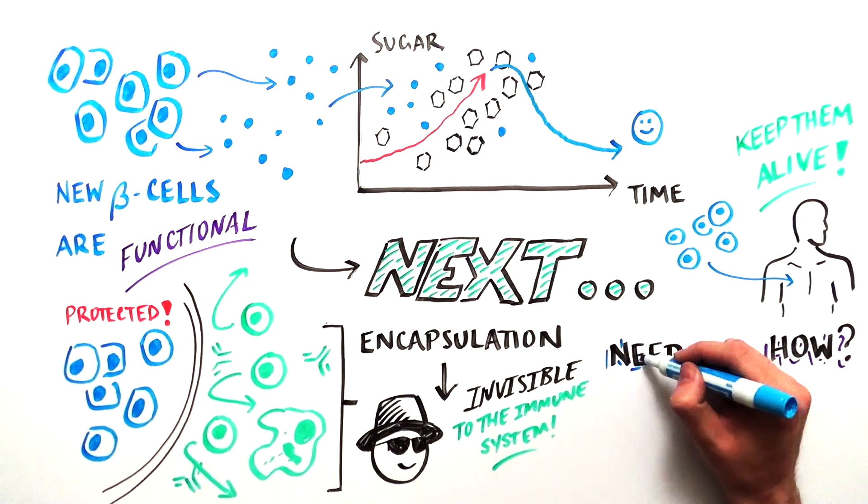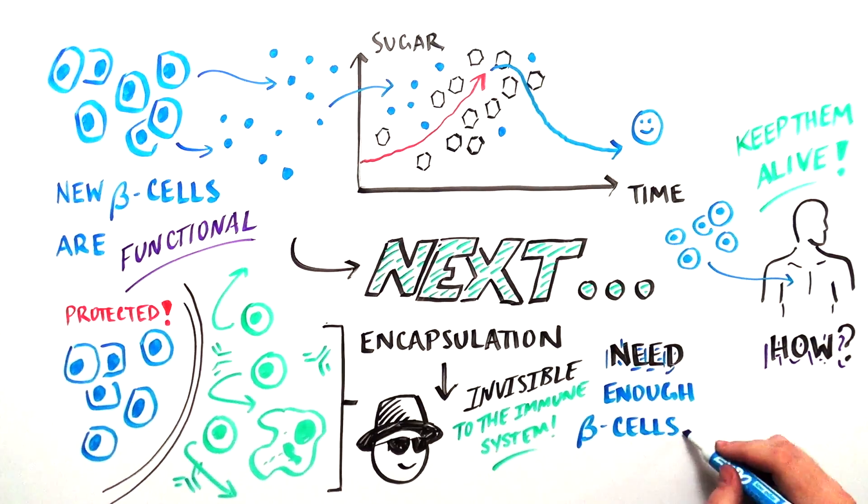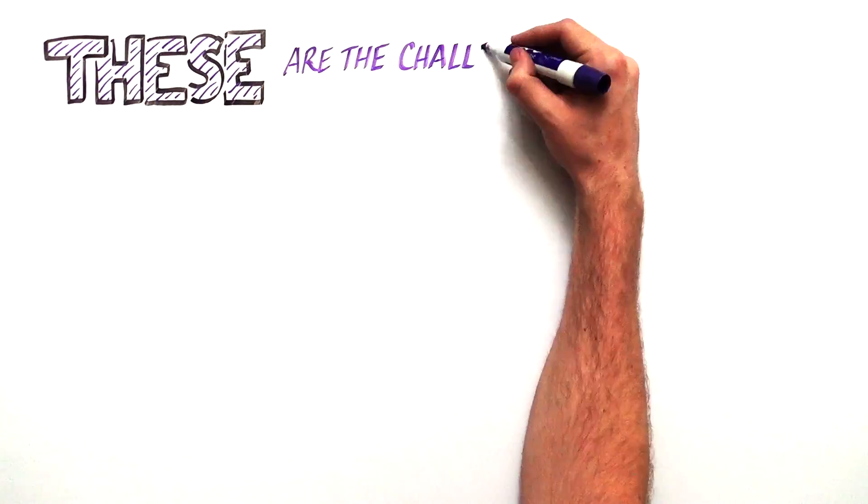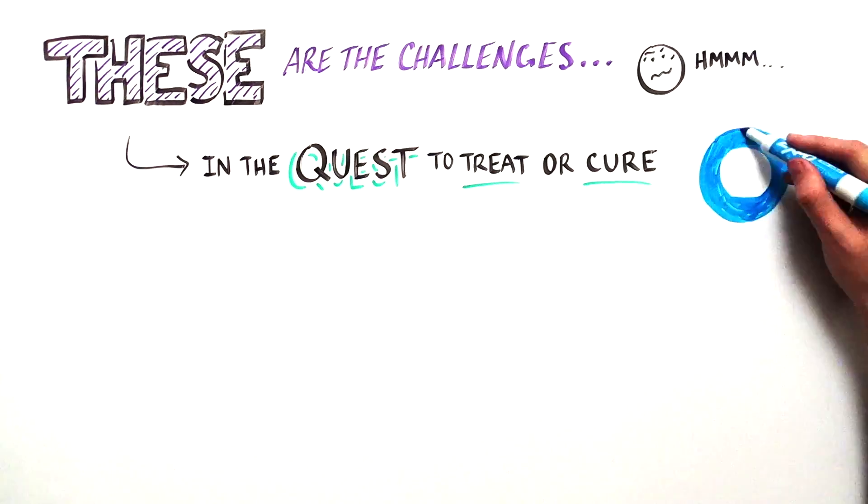Scientists also want to make sure they can produce enough viable beta cells to make sufficient insulin when the body needs it. These are the next set of challenges on our road to treating and maybe even curing diabetes.